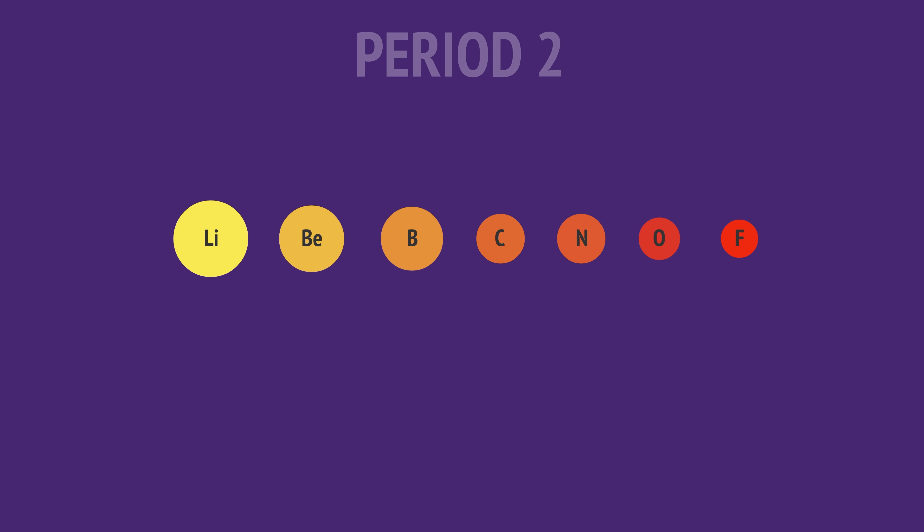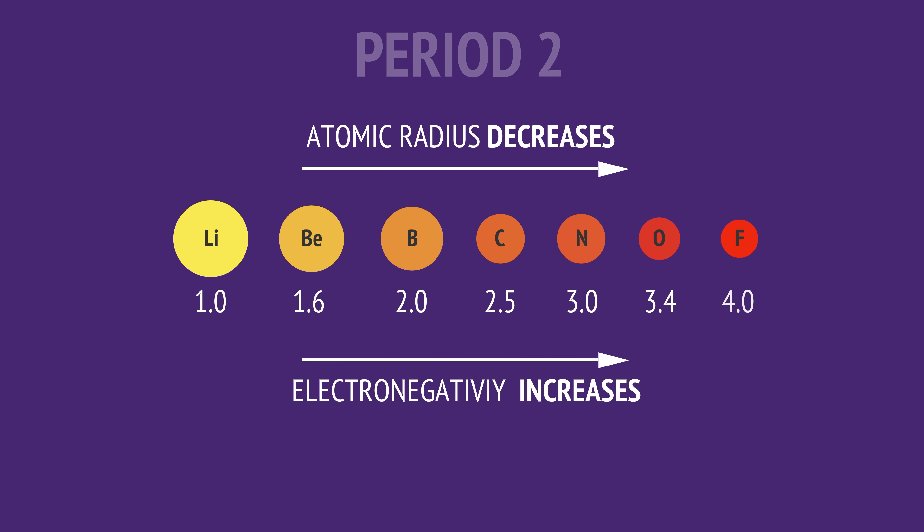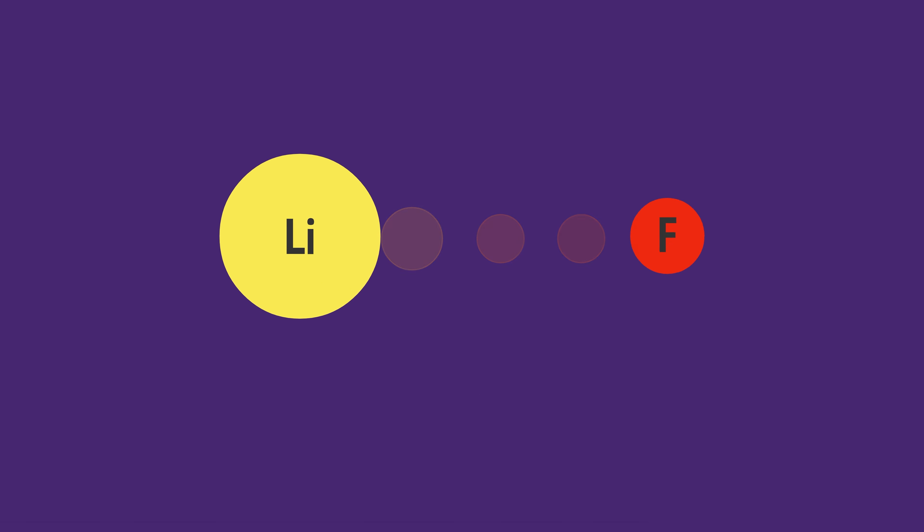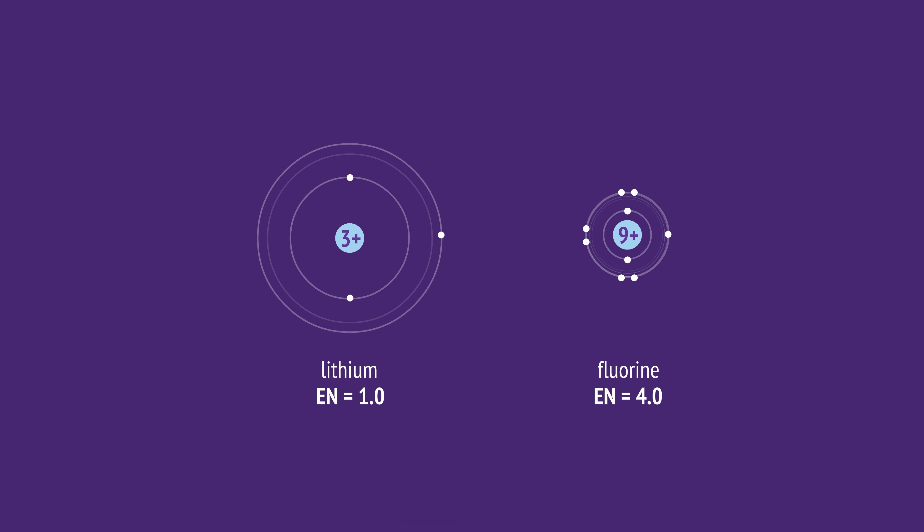And we can see this clearly in period 2, starting with lithium, having an electronegativity of just 1.0, up to the most electronegative element, fluorine. This trend is explained by the increase in nuclear charge as we move across the period. The greater the nuclear charge, the tighter the outer electrons are pulled in towards the nucleus.